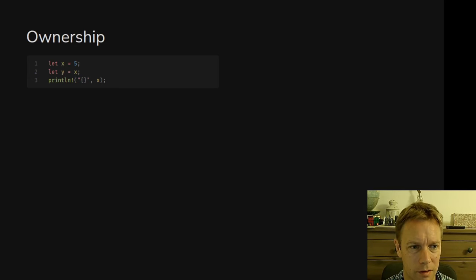But what about this program? It looks really similar — we create a string s1, then say s2 equals s1, then print out s1. What happens when we run that? It won't compile. We get an error message. These programs are really similar but they work differently. The reason is that i32s are Copy and strings are not Copy. This is the key to why these two examples are different.